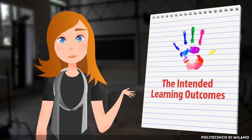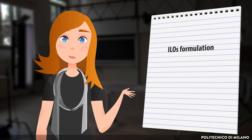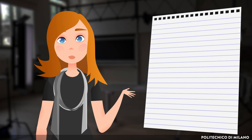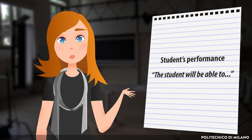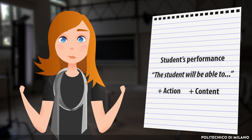Let's now try to summarize the main points. So that the Intended Learning Outcomes may be helpful as an effective reference point in our teaching design process, it's very important that formulating them also means focusing on the transformation of knowledge, abilities and skills we expect to be part of our students at the end of the course. To formulate the Intended Learning Outcomes well and in terms of our students' performance, we can use the introductory formula: the student will be able to, followed by a verb — the action we expect the student to perform — and the content, which is the object of the action. In this way, we will truly have focused on the outcomes we wish to achieve, so that they can be our guide every time we stand at a crossroad in our designing process.